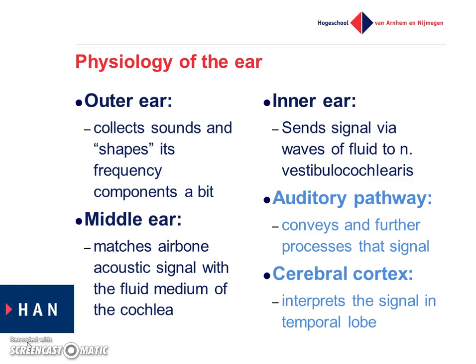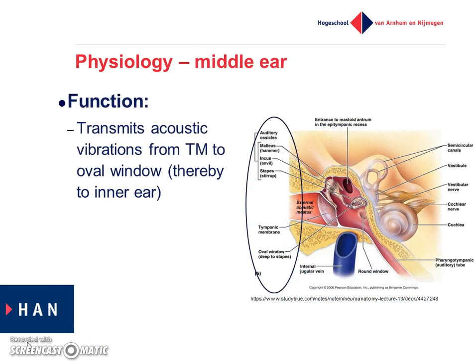So what is the function of the middle ear, or what is the physiology of the middle ear? The middle ear matches an airborne acoustic signal with the fluid medium of the cochlea. The function of the middle ear is to transmit acoustic vibrations from the tympanic membrane to the oval window.